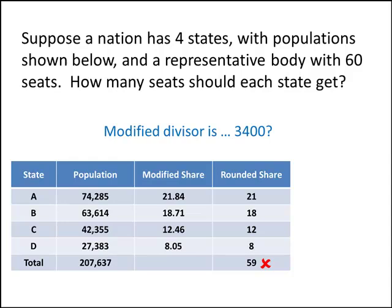We need to make our divisor a little bit smaller, because dividing by a smaller number will give us bigger answers. So if we have not enough seats, we make the divisor smaller. A little less than 3400 — let's try 3350. Dividing the population of each state by 3350 and rounding the answer down, we've now found the right answer. So that's Jefferson's method.